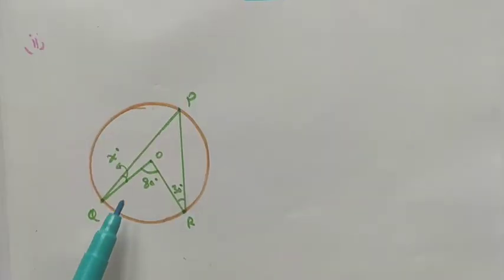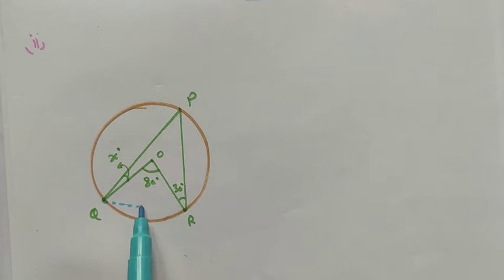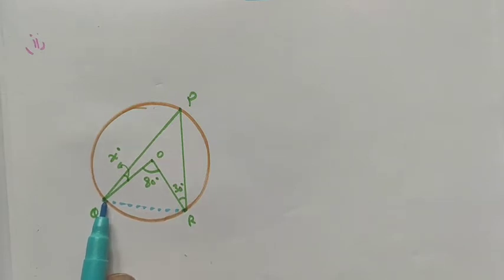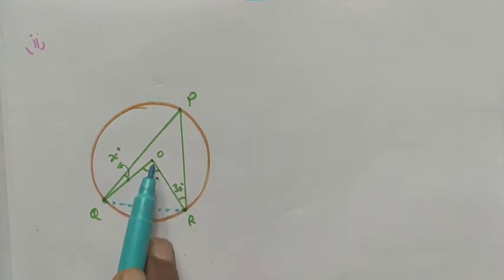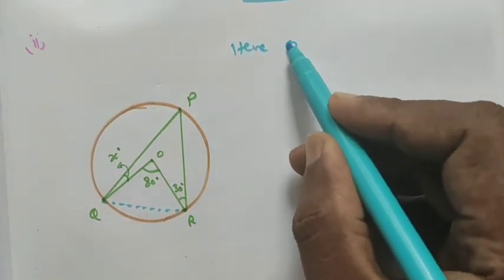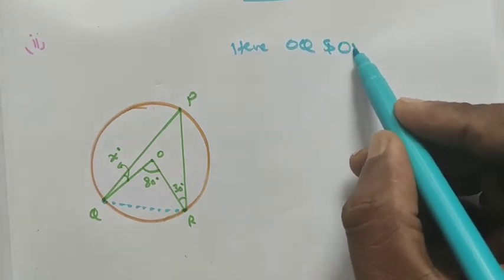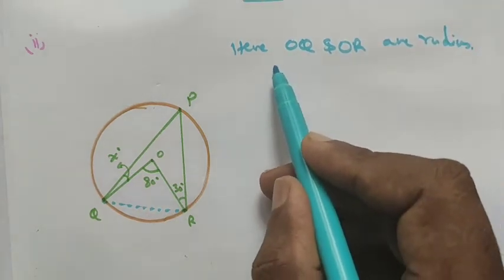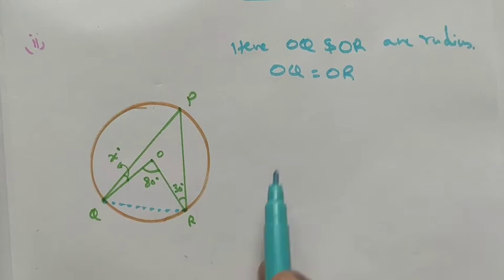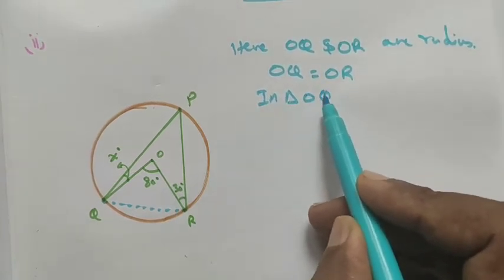Next is the second roman numeral. We drop the angle — we draw angle QR and the chord. In triangle OQR, OQ and OR are both radii, meaning they are equal in distance. That is the radius.